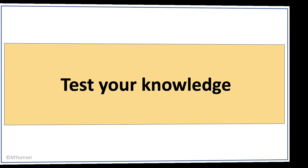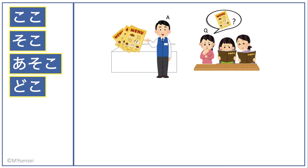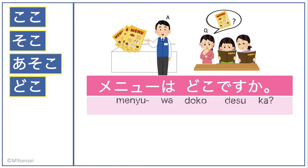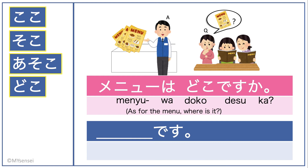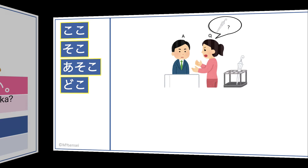Now let's test your knowledge. Would you use koko, soko, asoko, or doko in the blank? The woman on the far left is looking for a menu since she does not have one, so she would say, 'Menu wa doko desu ka?' If you were the waiter, what would you say pointing at the menus near you? The answer is, 'Koko desu.'